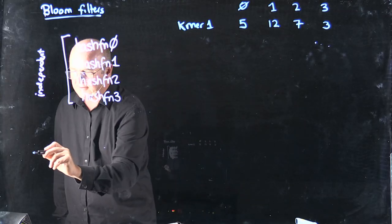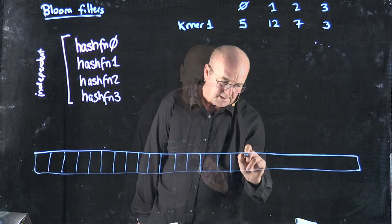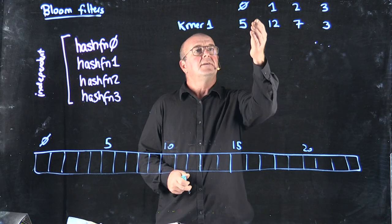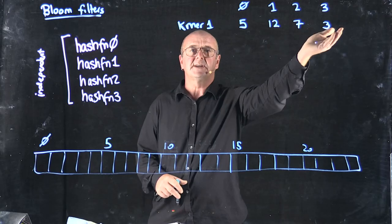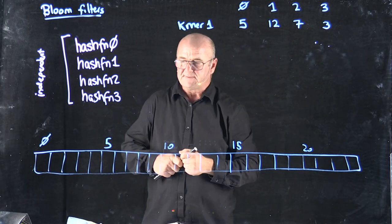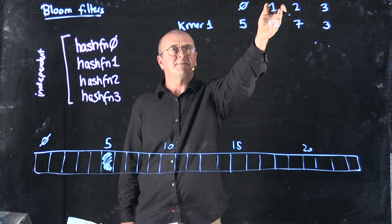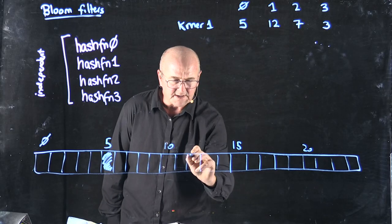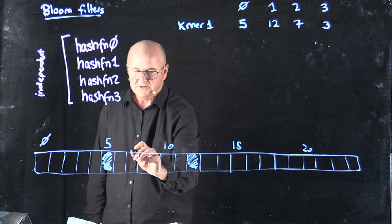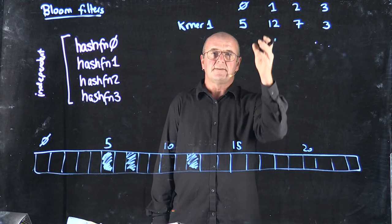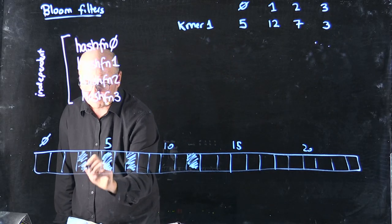Now what I'm going to do is have a big array of bits. For each of these values from the hash functions, I'm going to set the bits to be 1 at these locations. So for KMA 1, I got a value of 5, so I'm going to set this bit to be true. For hash function 1 I got a value of 12, so I'm going to set this bit to be true. For hash function 2 I got a value of 7, so I'm going to set bit 7 to be true. And for hash function 3 I got a value of 3, so I'm going to set bit 3 to be true.